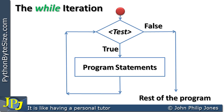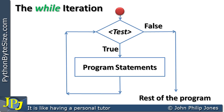Imagine a dot flowing into the test — while it's true, we go round and round. As soon as it's false, we leave the loop and carry on with the rest of the program. Here we can see the flow that occurs when the test is true, and as soon as it's false we exit the loop and leave the iteration.